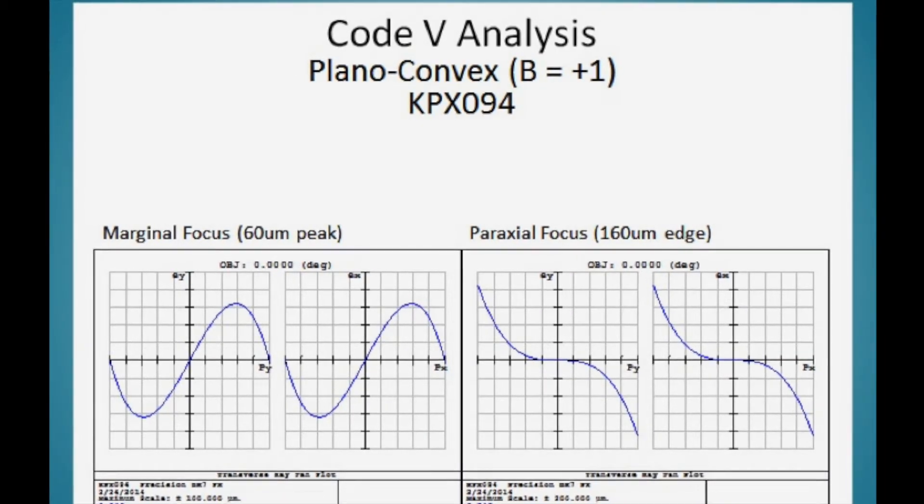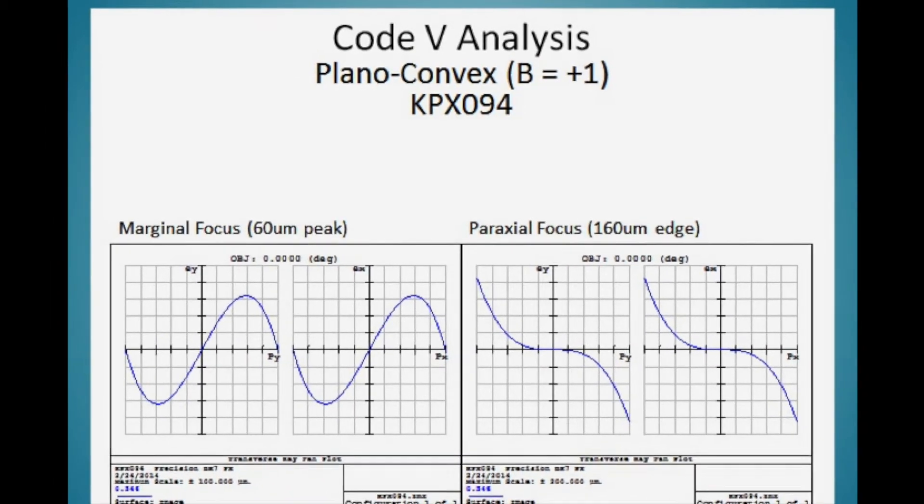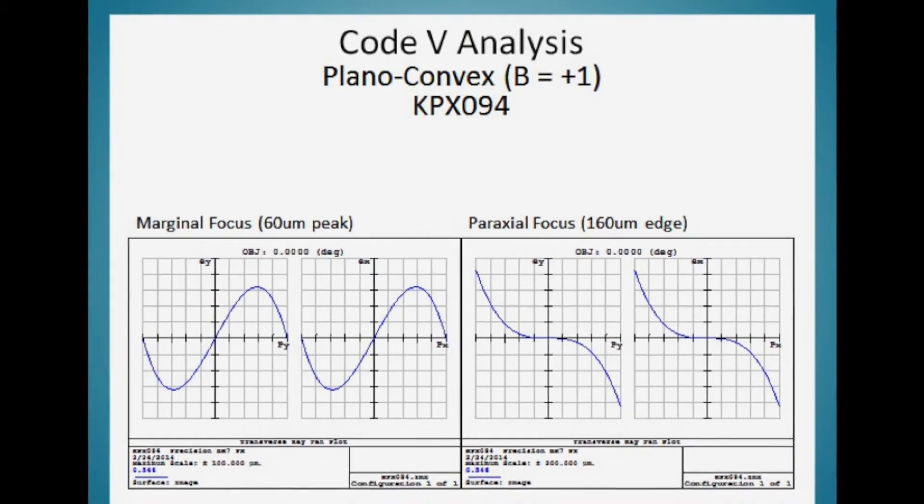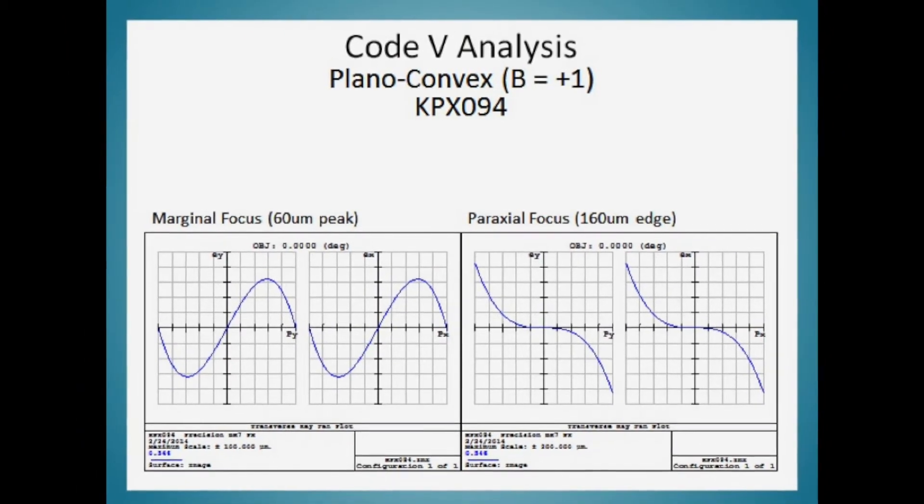With b equals positive one, we had less aberration, and with b equals zero for a biconvex lens, we had the least amount of aberration.